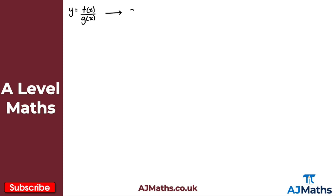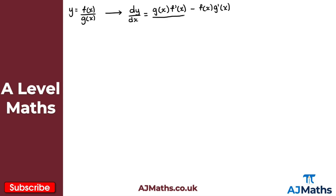So if we differentiate this we get dy by dx. To differentiate a quotient of functions, what we get is g of x multiplied by f prime of x, then subtract f of x multiplied by g prime of x, and this is all divided by g of x squared.